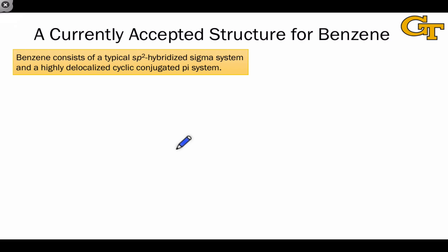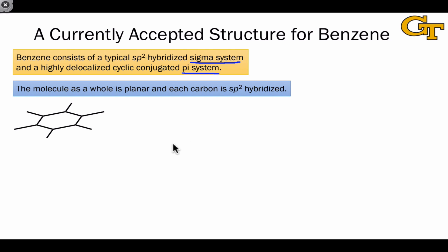In talking about the currently accepted and currently understood structure of benzene, I think it helps a lot to break the molecule down into its sigma system and its pi system. Looking just at the sigma system, we recognize the molecule as a whole is planar and every carbon having sp2 hybridization, so the sigma system is actually relatively straightforward.